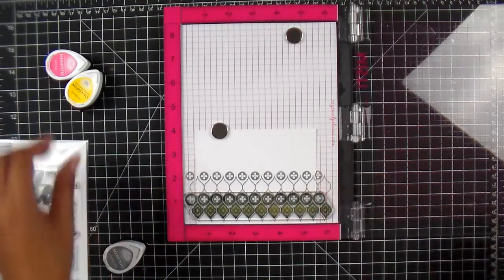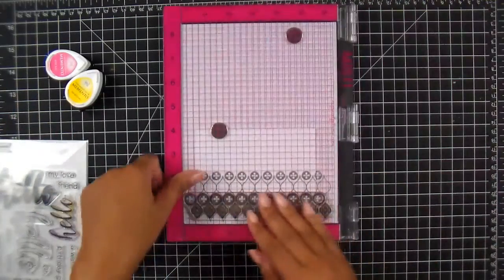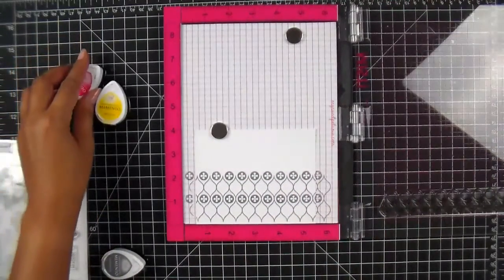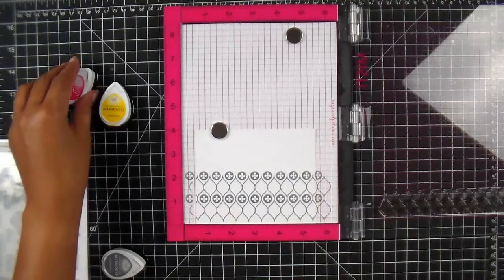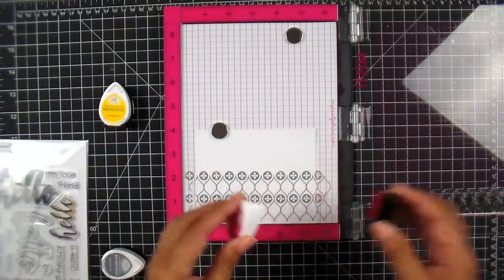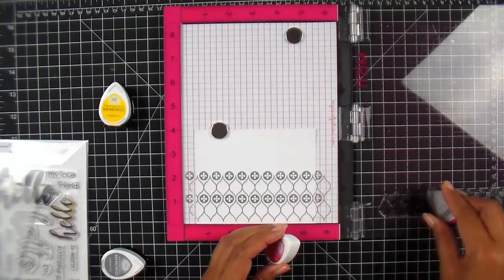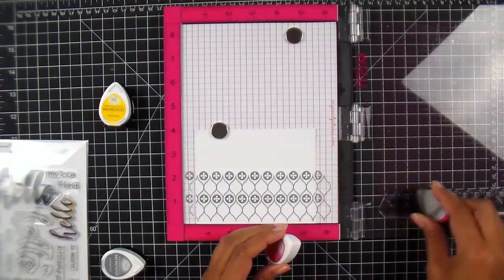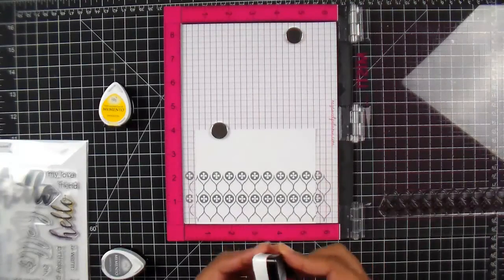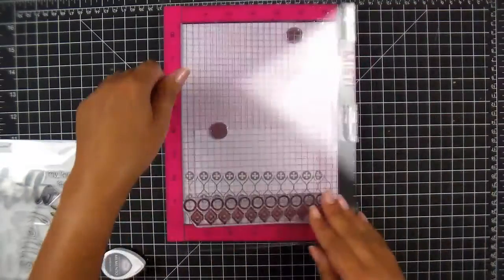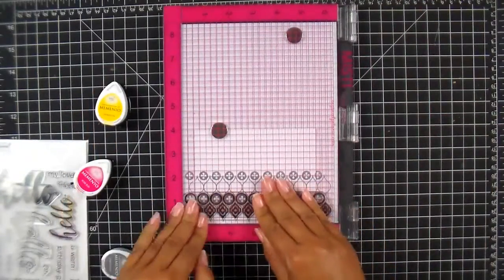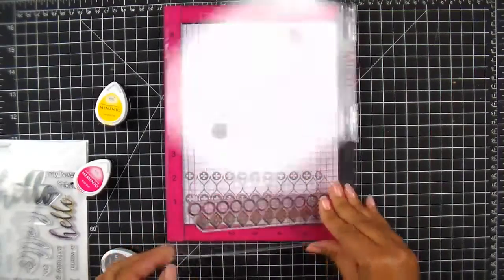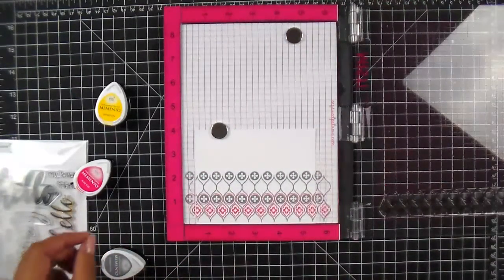Alrighty, I think that looks good. Okay, so let's close, pick it up, and we will start with the pink color, the rosebud. Just going to stamp across my stamp like I did before with the larger one and close.